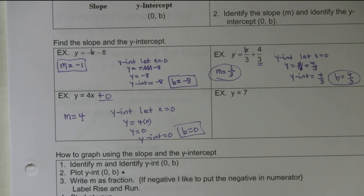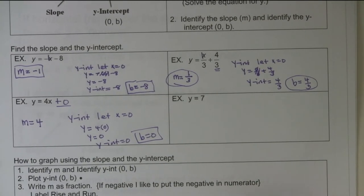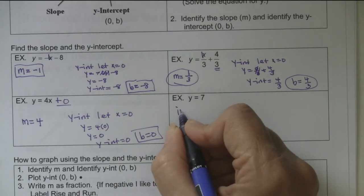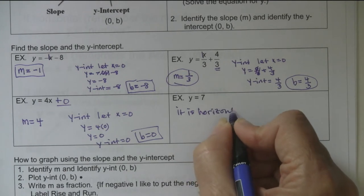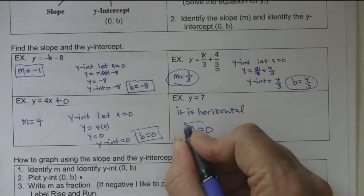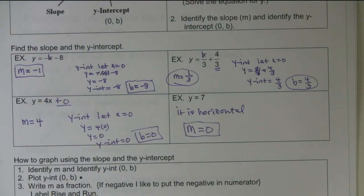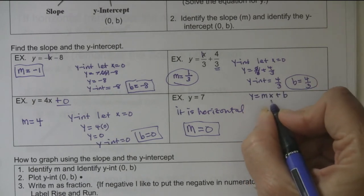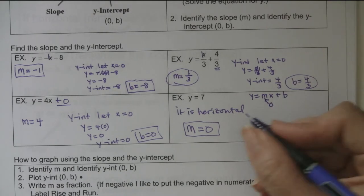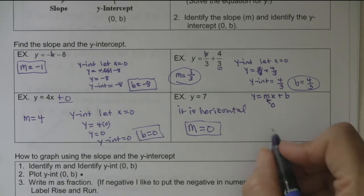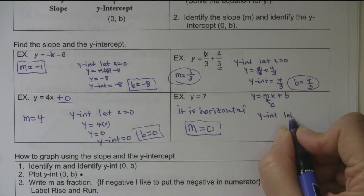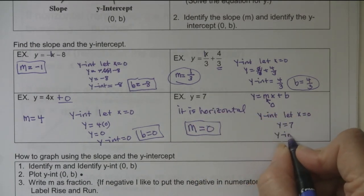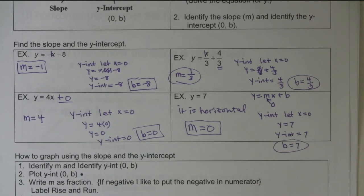This next one I wouldn't call a slanted line - I would say it is horizontal. All horizontal lines have slope 0 - that's a memory verse. So slope equals 0. This equation is in the form y = mx + b; it must be that m is 0 because 0 times x wipes out the x term. Now the y-intercept: let x equal 0. This equation doesn't care about x at all - y is 7. So the y-intercept is 7, or b equals 7.